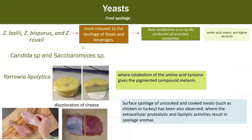The second most common pathogen microorganism involved in food spoilage is yeast. Zygosaccharomyces bailii, bisporus, and rouxii are the most well-known spoilers of food and beverages. These yeasts are characterized by fermentative spoilage of products such as fruit juices, syrups, sauces, alcoholic beverages, honey, and jams.